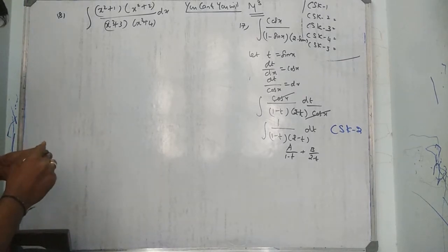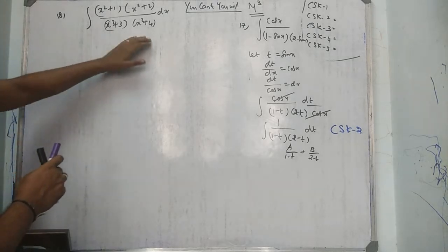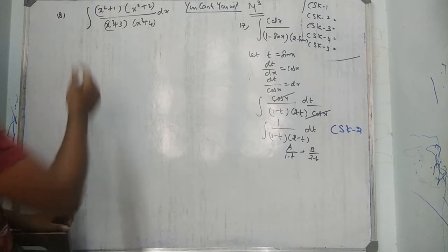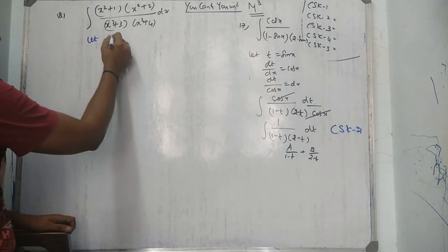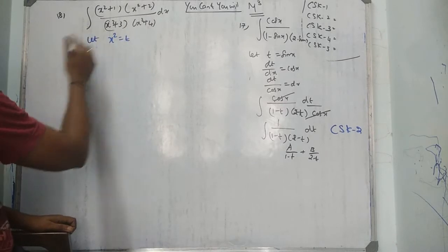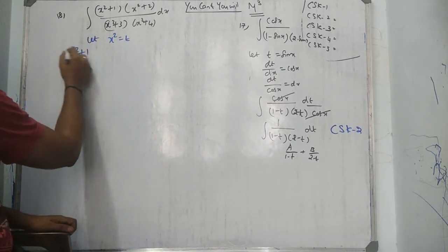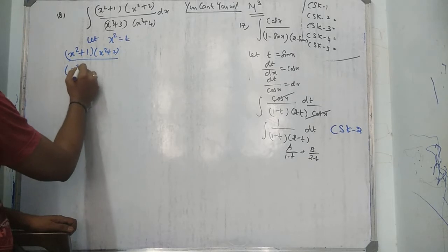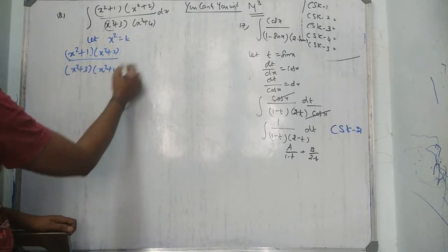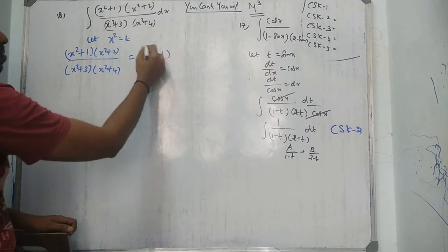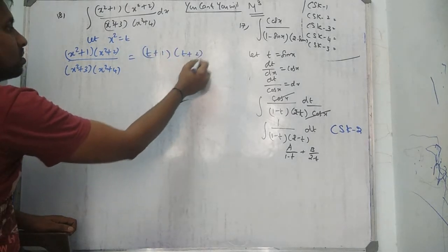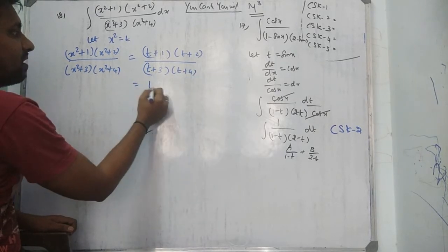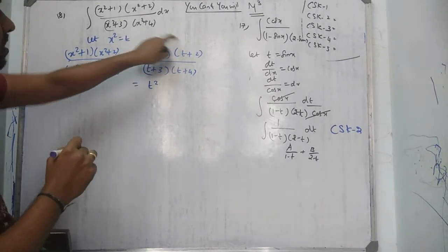You have to be very careful here. Whenever x square terms come, the shortcut is to let x² equal to t. Don't differentiate — just change the question. So x² + 1 times x² + 2 over x² + 3 times x² + 4 can be written as (t + 1)(t + 2) over (t + 3)(t + 4).